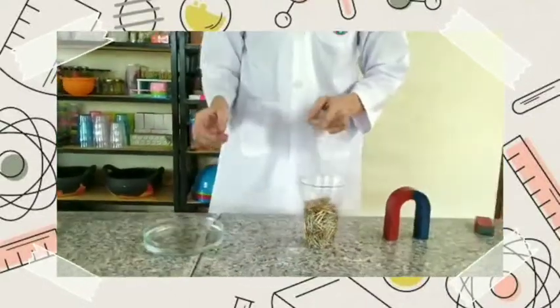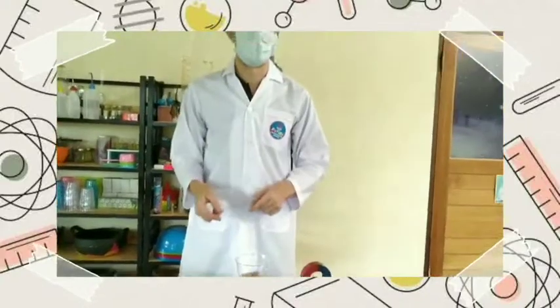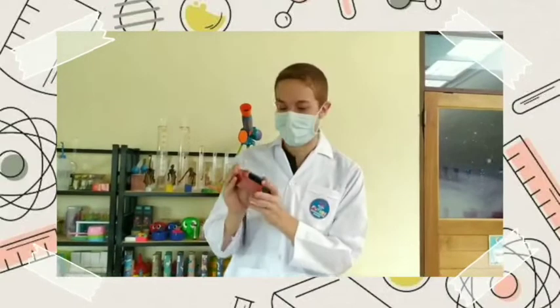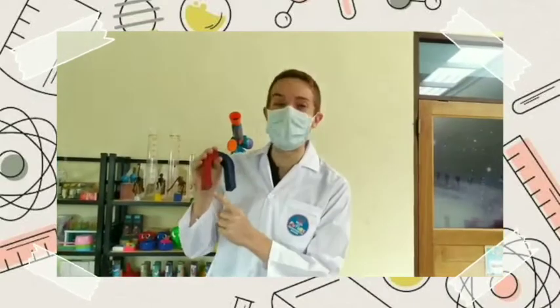Now that we know what we've got, let's get started. First let's look at our magnets. We can see it's got two letters, N and S. N means North and S means South.